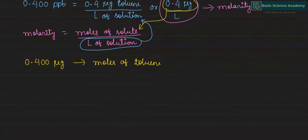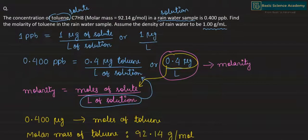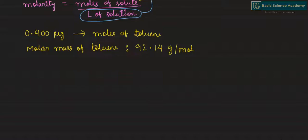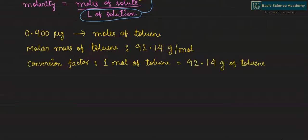For this conversion, we need to use the molar mass of toluene. The molar mass of toluene is 92.14 grams per mole, which is already given. The conversion factor we get from the molar mass is: 1 mole of toluene equals 92.14 grams of toluene.